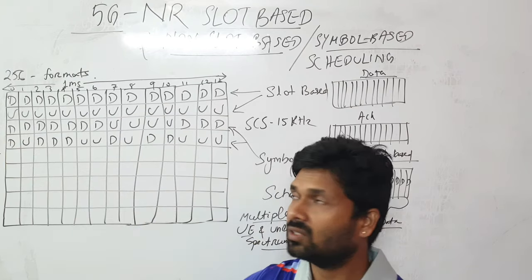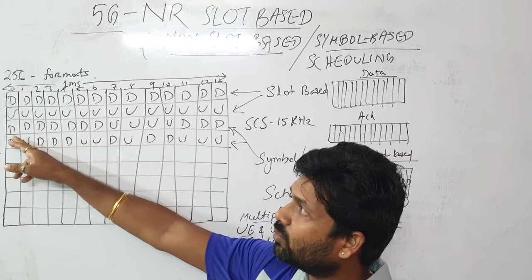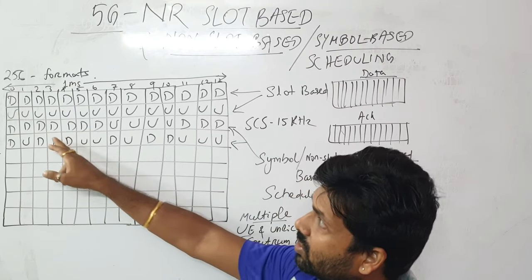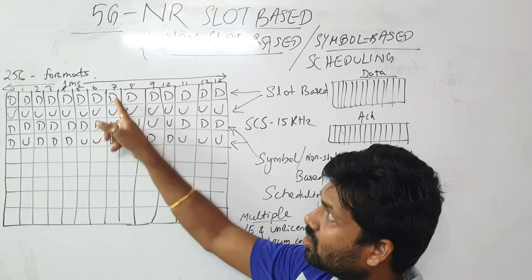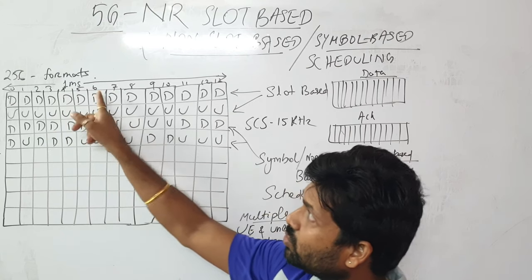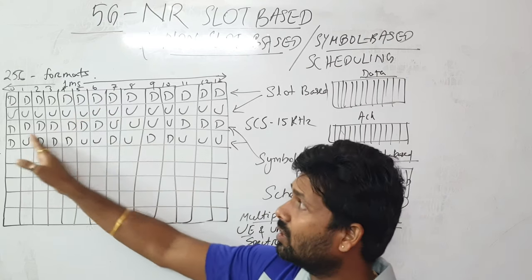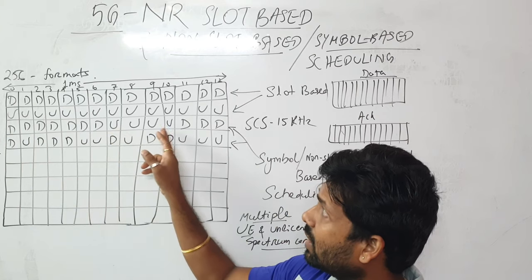I am doing downlink transmission for 7 symbols, and then the 8th symbol, or symbol number 7, because 0 to 6 is 7 symbols downlink, and then I'm allowing for uplink transmission.